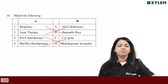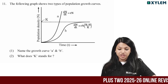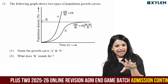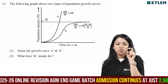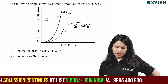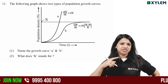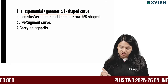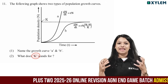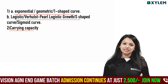The following graph shows two types of population growth curves. Name the growth curves A and B, and what does K stand for? The equation is dN/dt = rN and dN/dt = rN(K-N)/K. Graph A is the exponential or J-shaped growth curve, and Graph B is the S-shaped logistic growth curve. K stands for carrying capacity — the carrying capacity of nature.